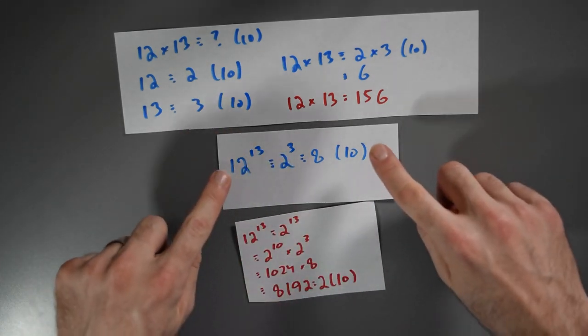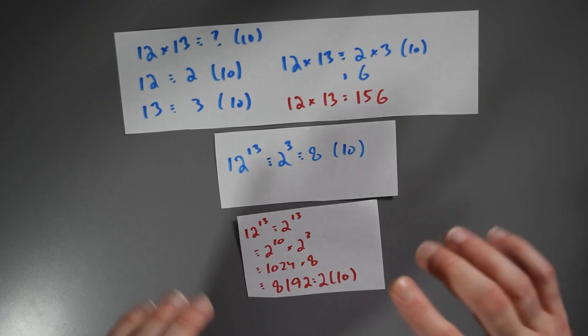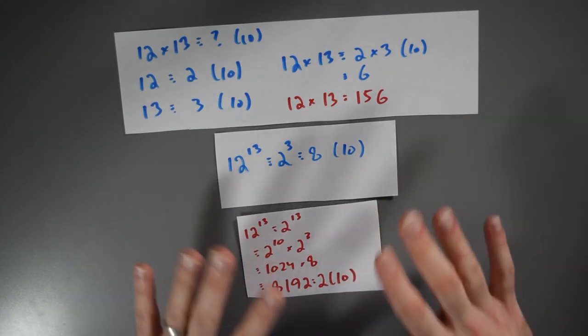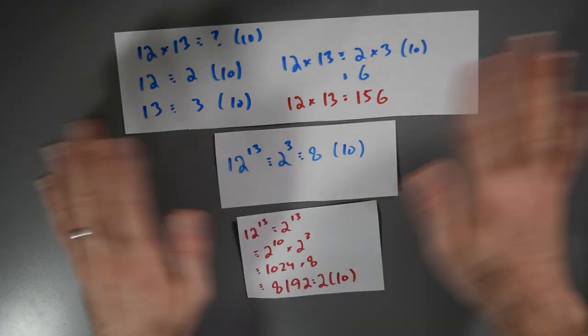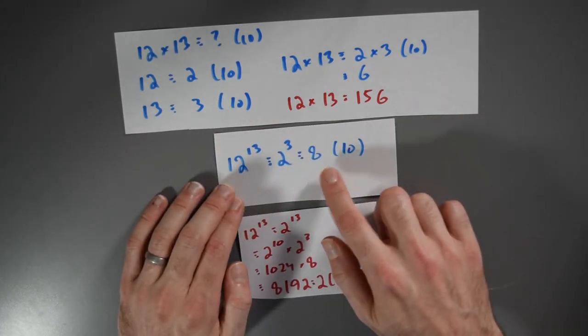Well, the problem is that 8 and 2 are not congruent modulo 10. So it can't be the case that both this statement and this statement are true. What is true is this statement. It is the case that 12 to the 13th power is 2 modulo 10. But it's not the case that 12 to the 13th is 8 modulo 10. So let's try to figure out what went wrong.